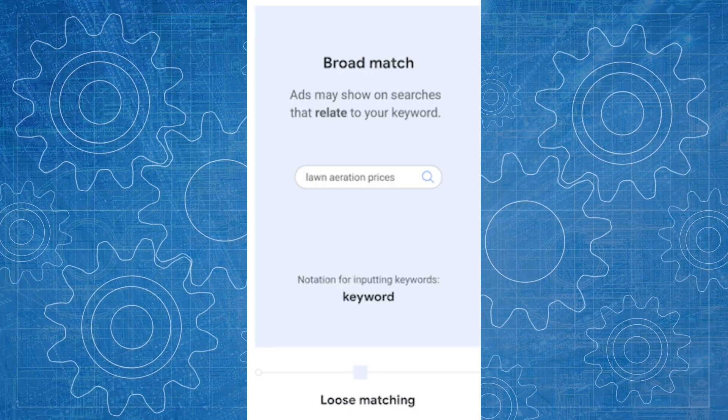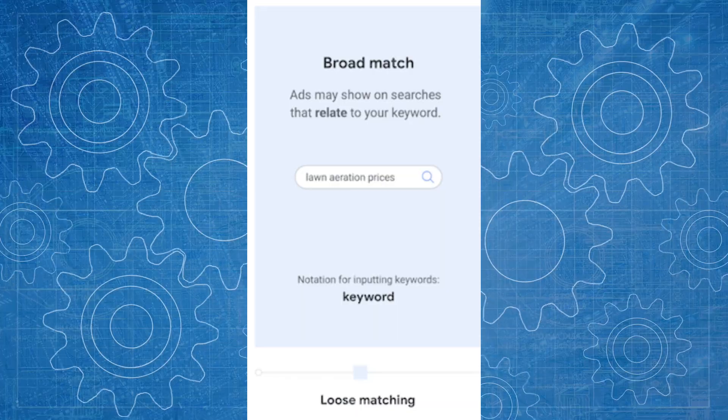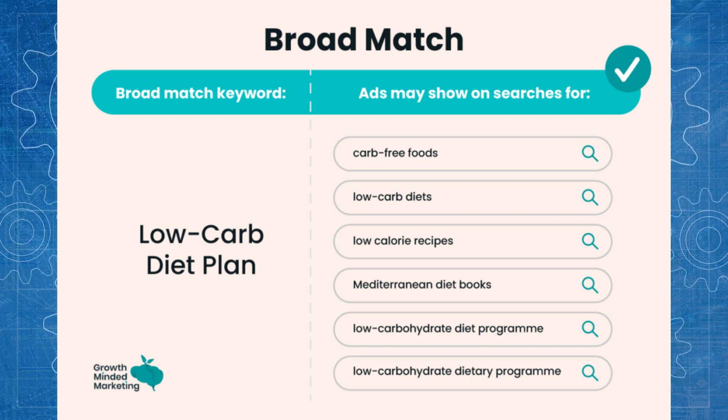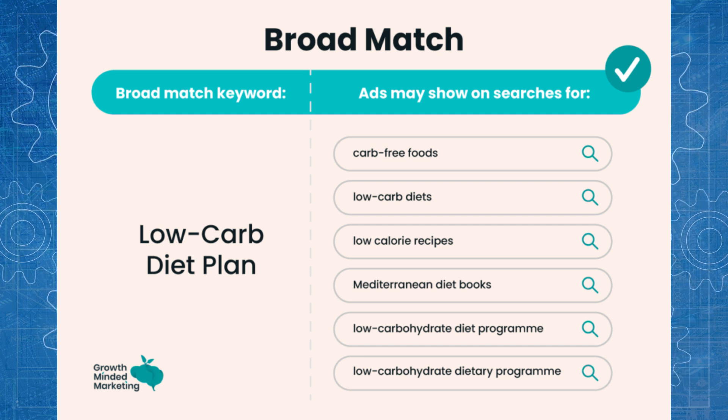How do these different keyword match types change how your keywords interact with a user's search term? Let's start with broad match. Broad match means you create your keywords in your account with no special characters around the keyword terms themselves — you just enter the keyword as they are. This essentially makes the keyword broad match, and the way broad match works is to match to anything subject matter related to the keyword itself.